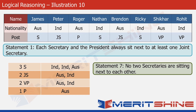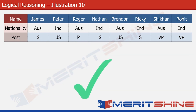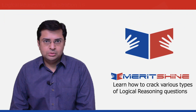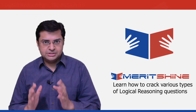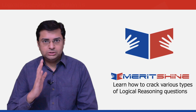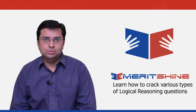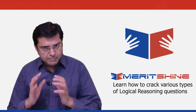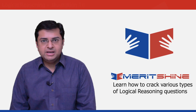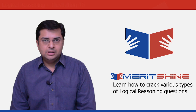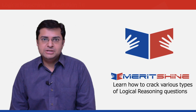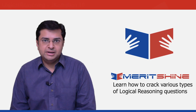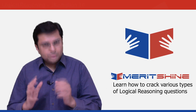This is how we solve linear seating arrangement problems with a single row. Just be careful with the directions — left, right, north, south — and you will sail through. When in doubt, imagine putting yourself in place of a person mentioned in the problem to visualize the setup easily. Our next problem will again be based on linear seating arrangement but with 2 rows, which makes it slightly more complicated. See you soon. Goodbye until then.